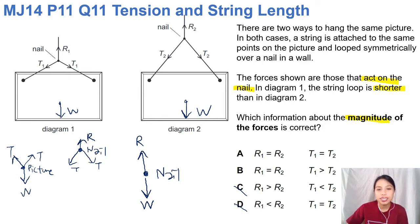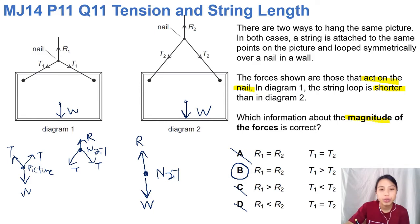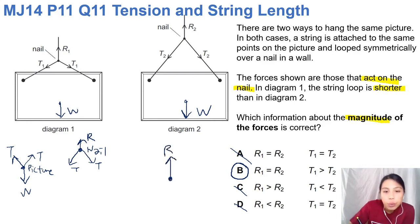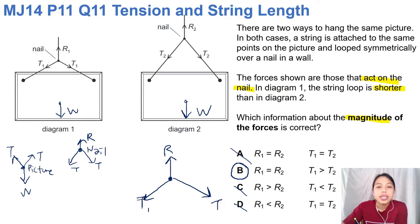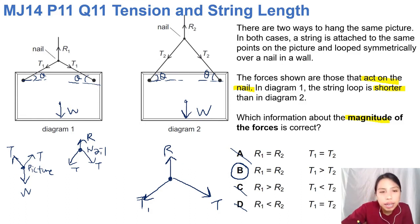The tensions are not the same, because the angles are different — the lengths are different — so tension cannot be the same. That leaves only choice B. Tension one is greater than tension two. To see why, let's draw the diagrams. We have the same R force balancing out the T forces. The only difference between both setups is the length of the string, which affects the angle theta.